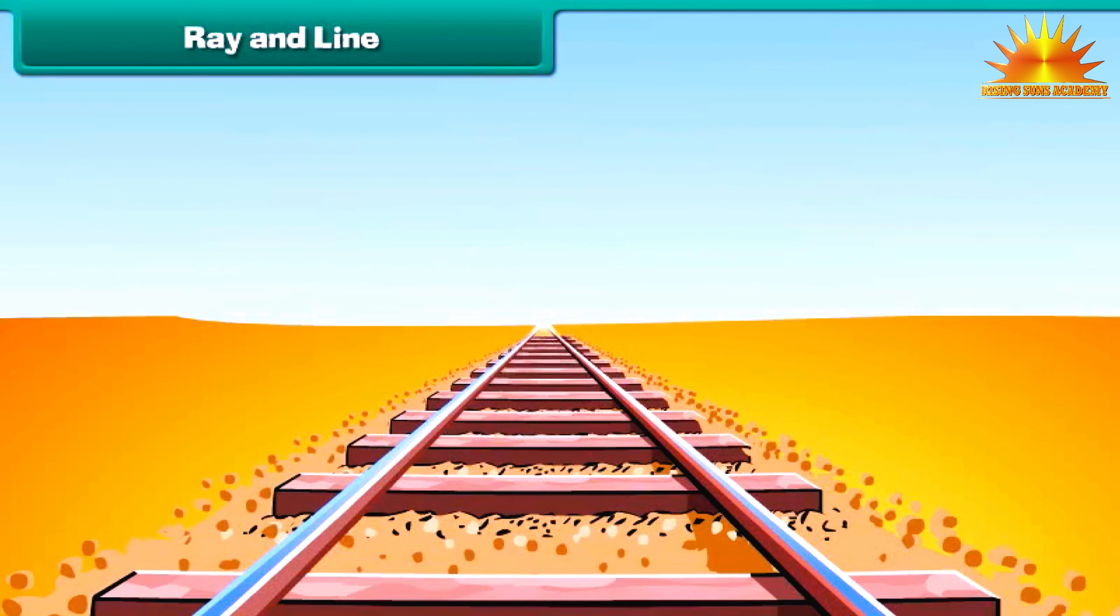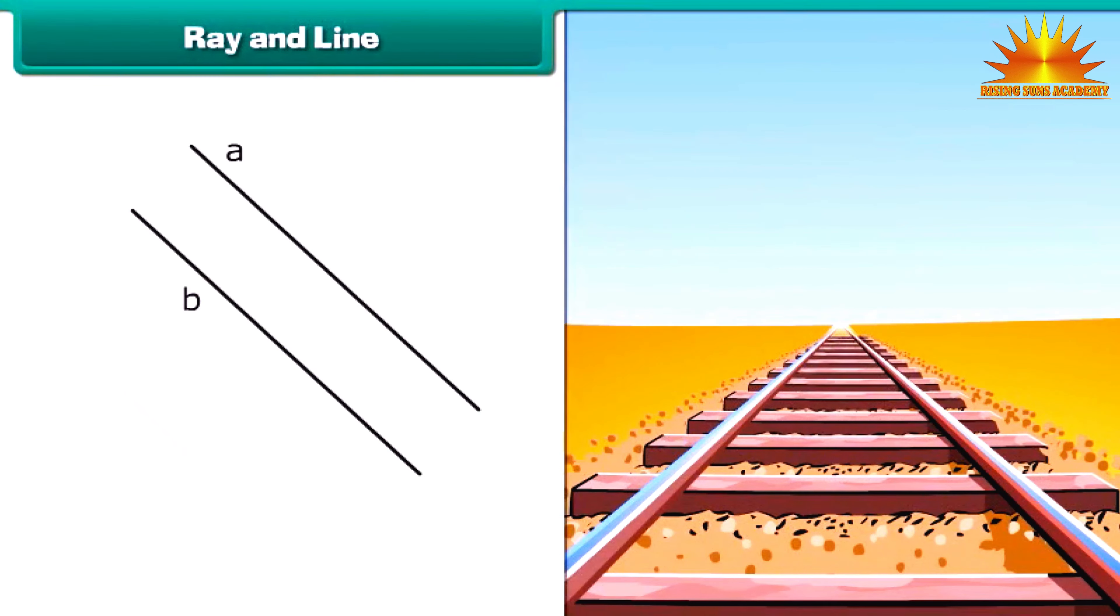Now notice this railway track. The two sides of track do not cross one another. These sides are parallel. Similarly, two lines are said to be parallel lines if no matter how far the lines extend in either direction, they never cross each another.